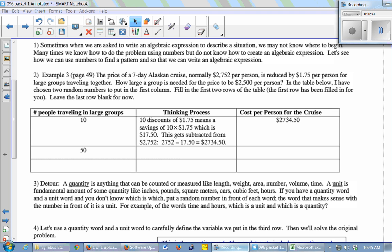We're going to just use the numbers to figure out how much it would cost per person. So in this first row, if 10 people are traveling together, you get 10 discounts of $1.75. You get $1.75 off for each person in the group. So that means we would save 10 times $1.75, which is $17.50 per person. So you subtract that from the original cost, $2,752 minus $17.50, and you get $2,734.50.